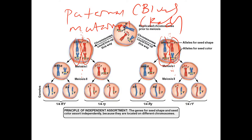You get a daughter cell with paternal gene R and maternal gene Y, and another with maternal gene R and paternal gene Y. You can get very unique combinations of genes this way, depending on how these chromosomes line up during metaphase I.